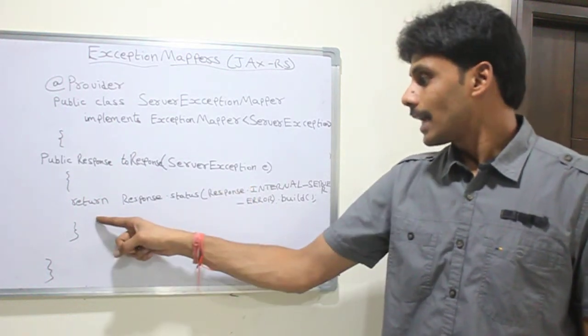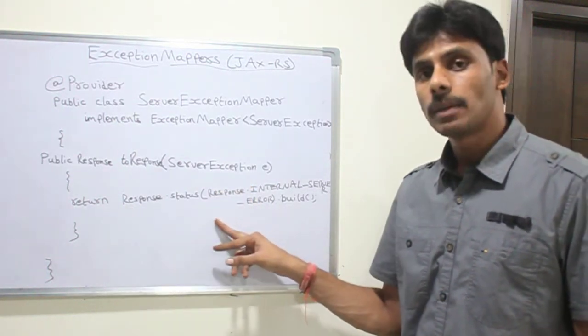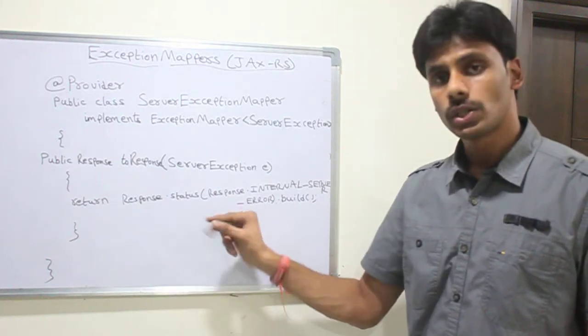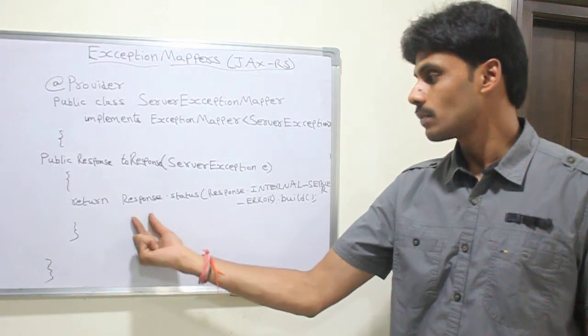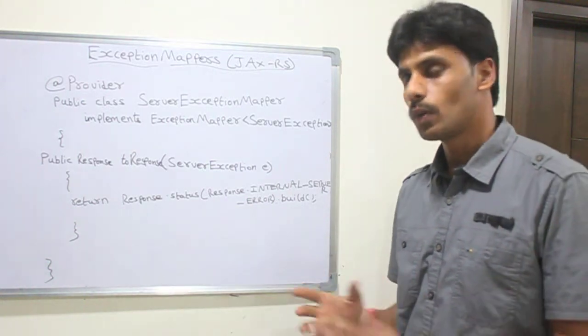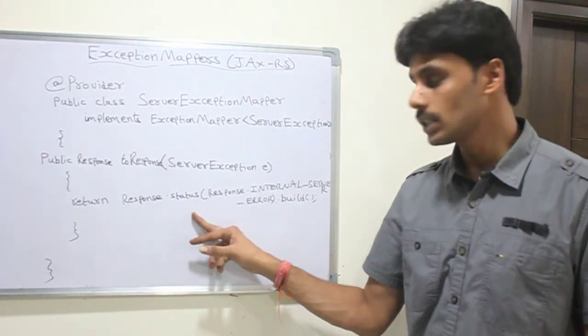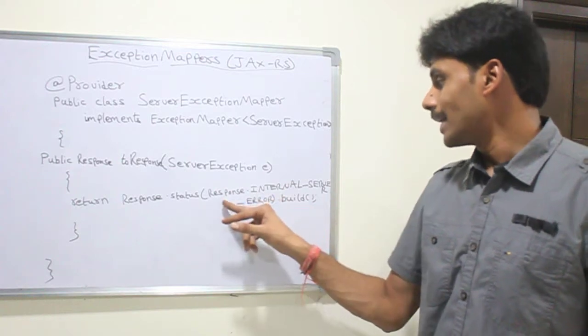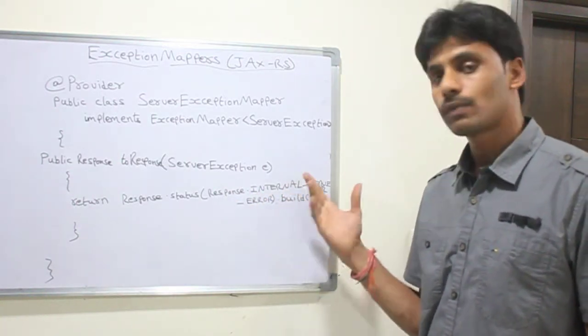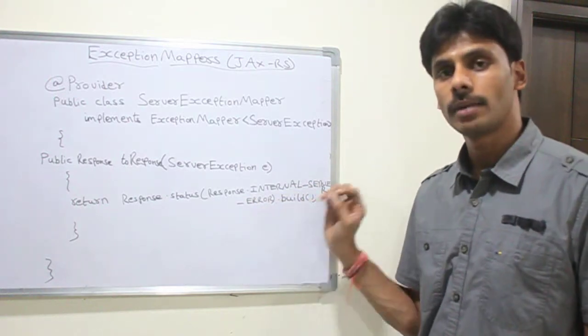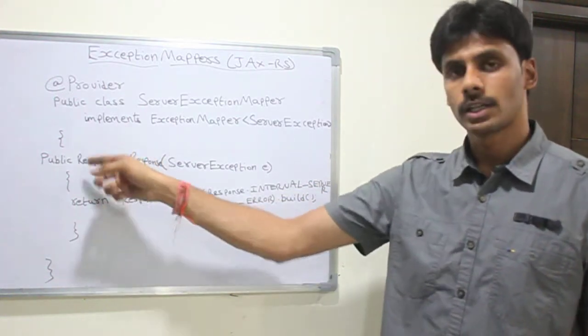inside which I am building the HTTP error response which is response.status. So the JAX-RS API also provides us with classes which are very useful to build the response. Response.status and then the HTTP error code for internal server error is 500, so it has a constant defined. I am just using it to build the response object.